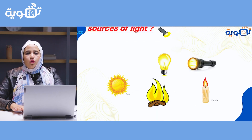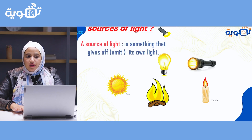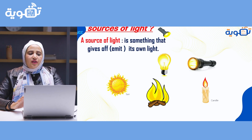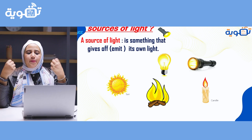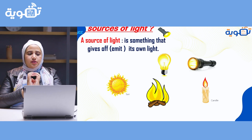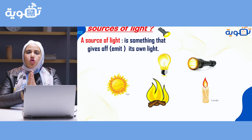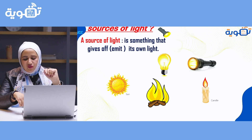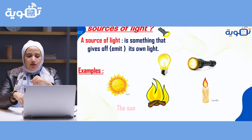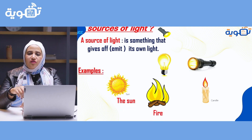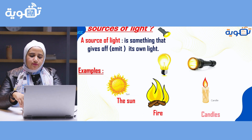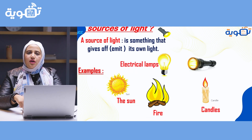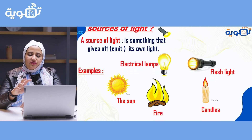So, what is the meaning of source of light? Something that gives off, emits, or produces its own light — we call it a source of light. Like the sun, fire, candles, electric lamp, and the flashlight.